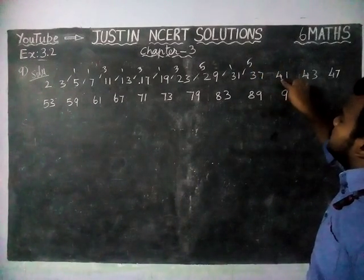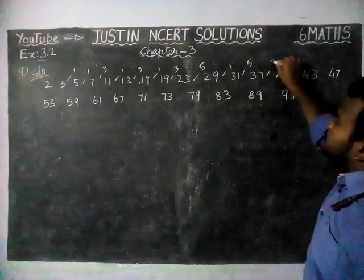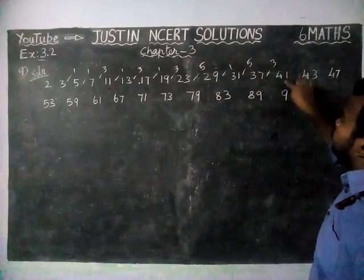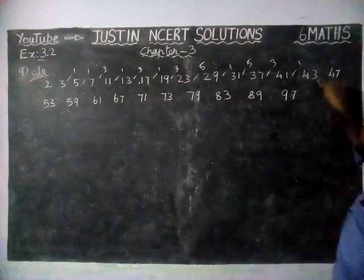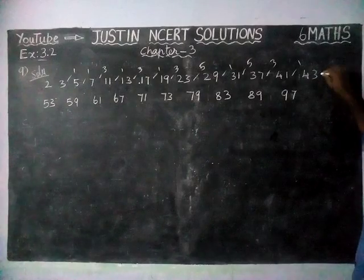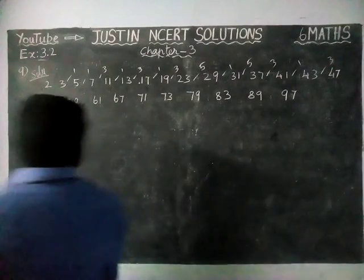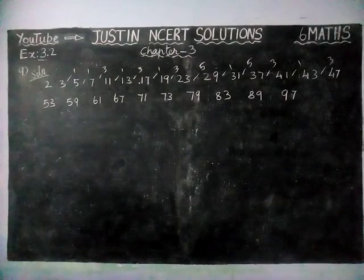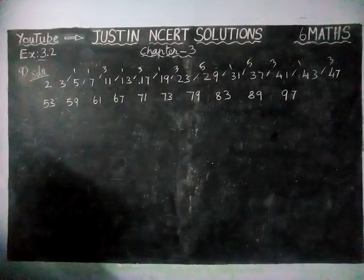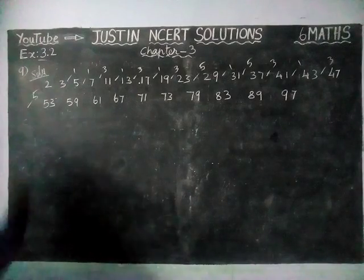Between 37 and 41: 38, 39, 40 — 3 numbers. From 41, only one number. 44, 45, 46 — 3 numbers. Next, 47 to 53: 48, 49, 50, 51, 52 — only 5 numbers.